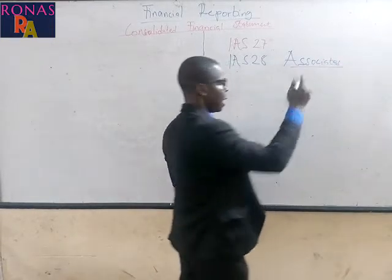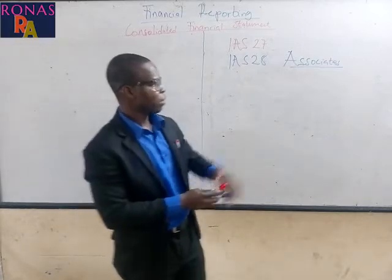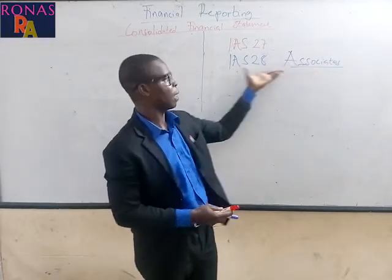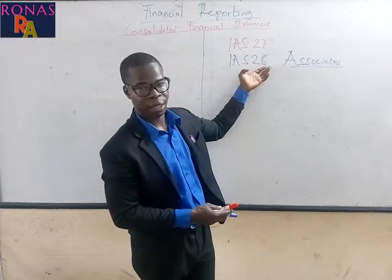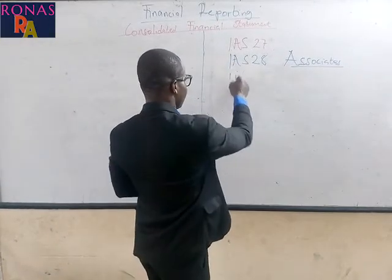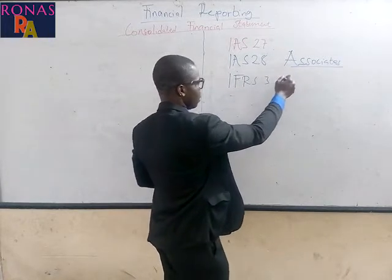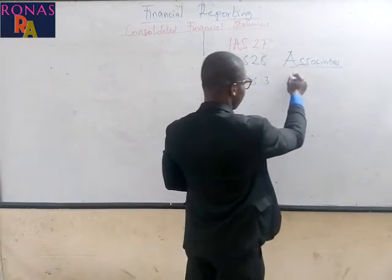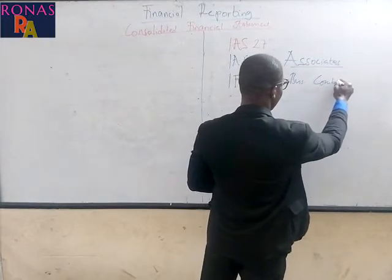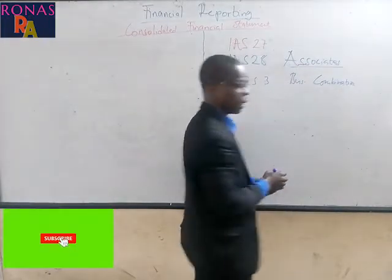By the end of this particular lesson, you will know what an associate is. So IAS 28 is about investment in associate. We also have IFRS 3, which is talking about business combination.